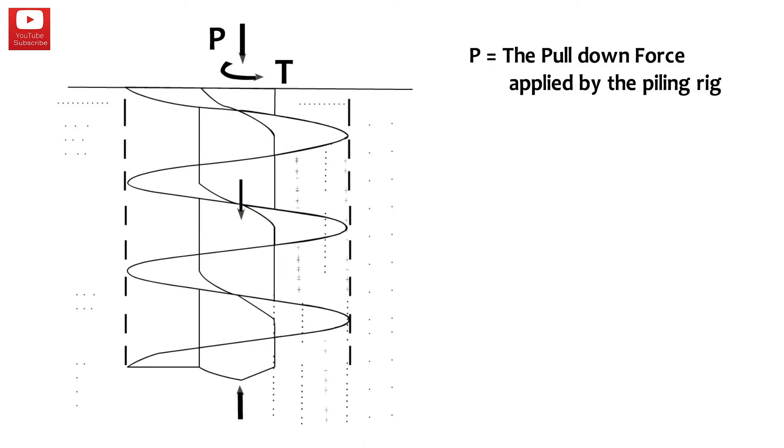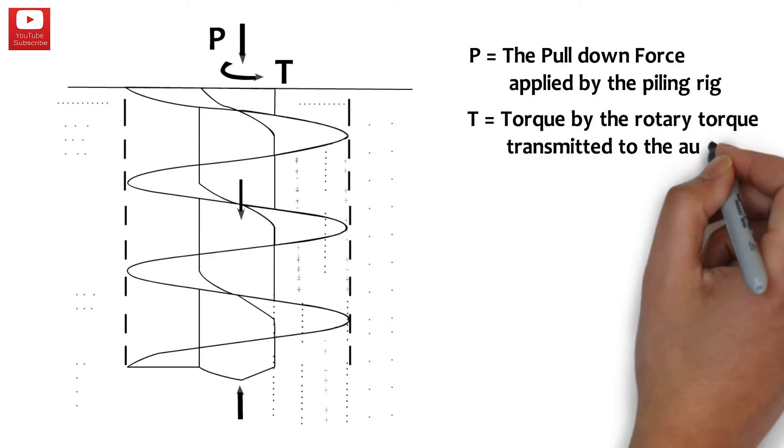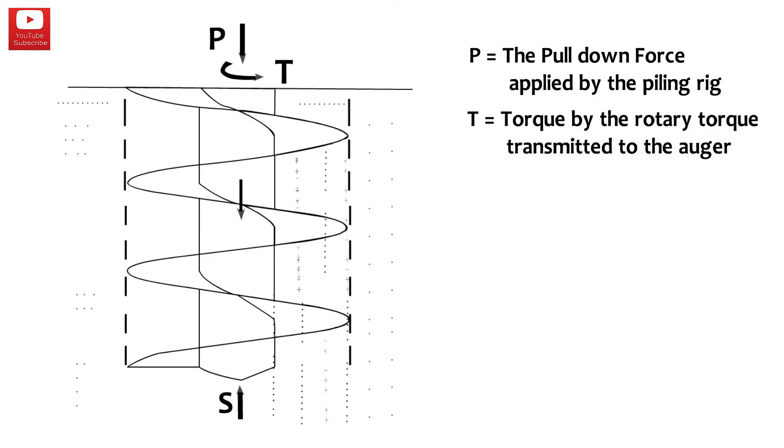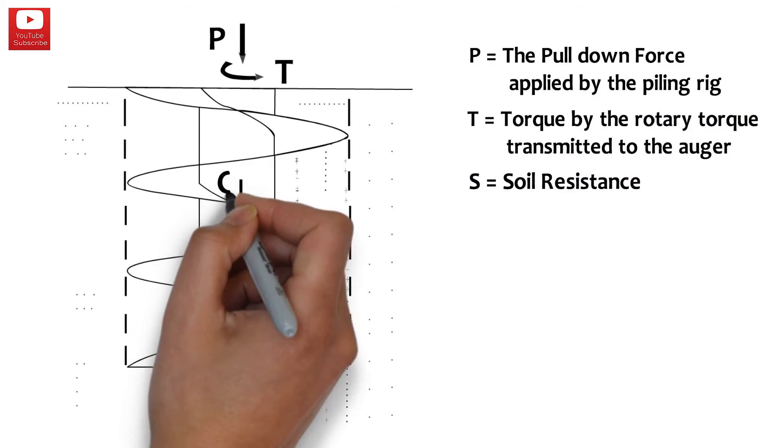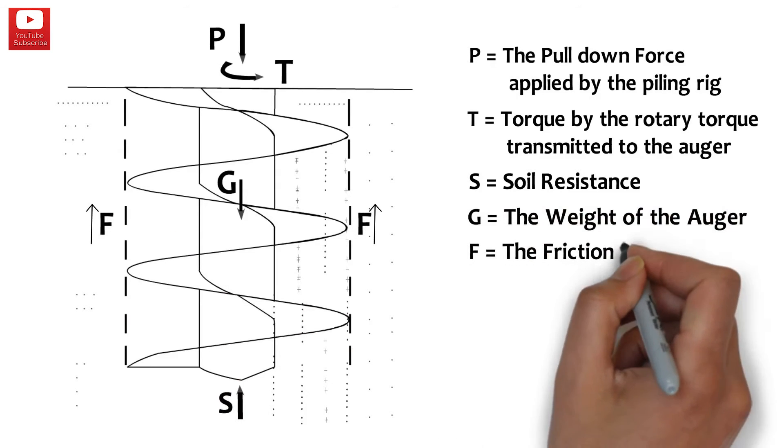T equals the torque by the rotary torque transmitted to the auger. S is soil resistance. G equals the weight of the auger. F is the friction between the soil in the auger and the soil around the auger.